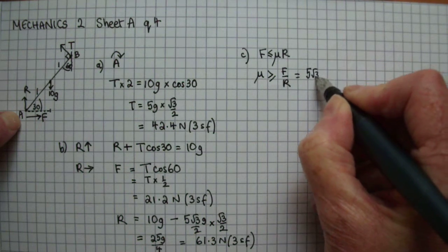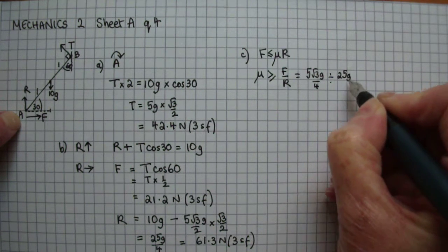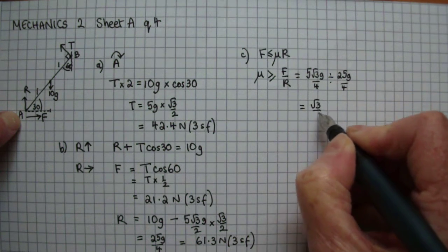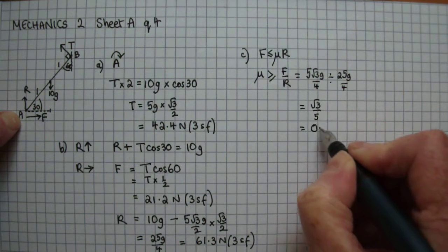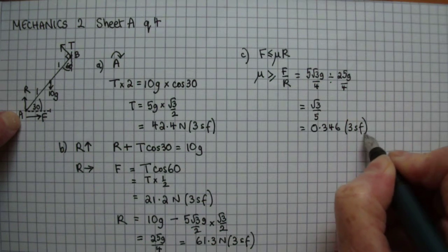Which is root 3 over 5, which is 0.346 to three significant figures.